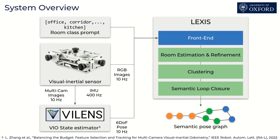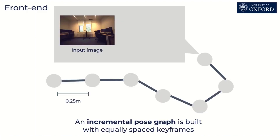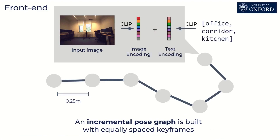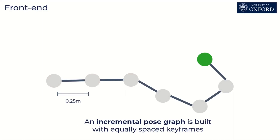We present the front-end of our system. We build an incremental pose graph of equally spaced keyframes. For each new keyframe, we extract AKAZE features for pose estimation and CLIP image encodings for semantic understanding. We extract the text encoding from a prior list of rooms and use the cosine similarity to compare it to the image encoding. This provides an initial room segmentation estimate.